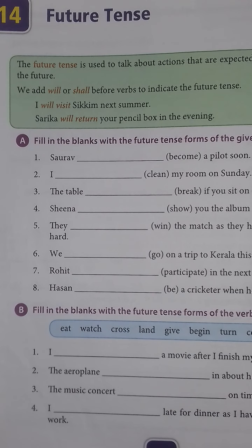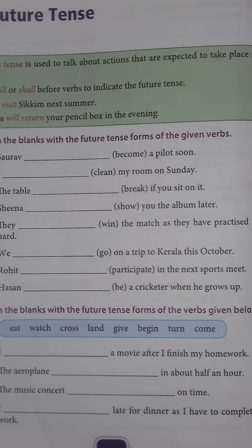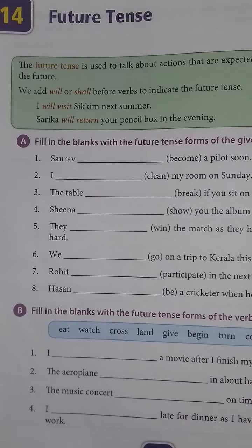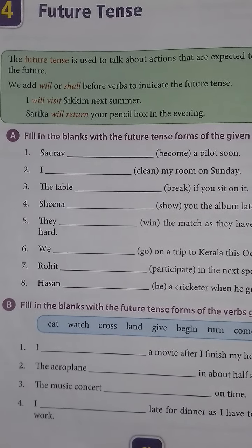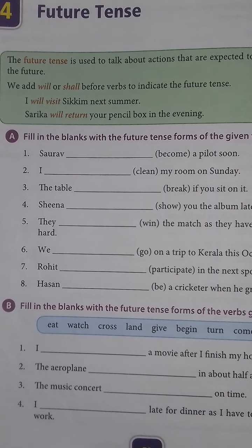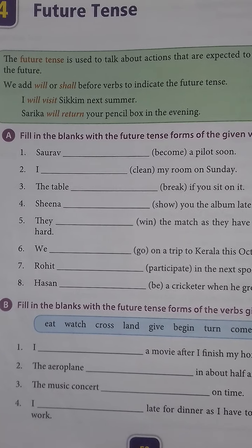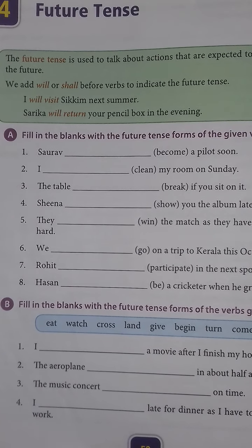Hello everyone, children. Today we will start future tense. So children, let's start the tense. The future tense is used to talk about actions that are expected to take place in the future. Future tense is used when we talk about actions which are going to be in the future.